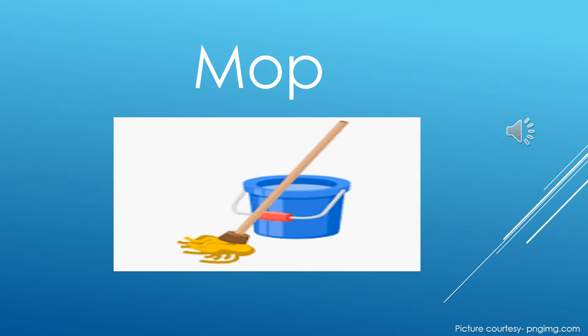Now the next word is M, Op — Mop. Sound of M is M, and then Op — Mop. We mop the floor. We clean the floor. That is Mop. Can you see a bucket and a mop kept out there?